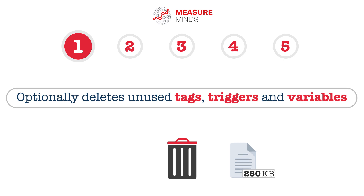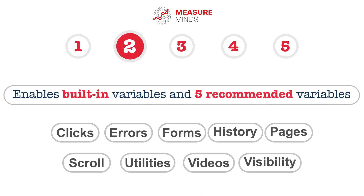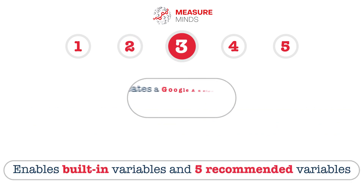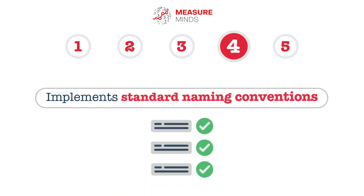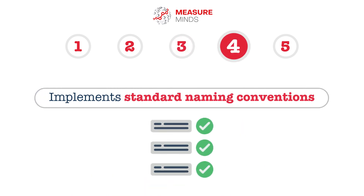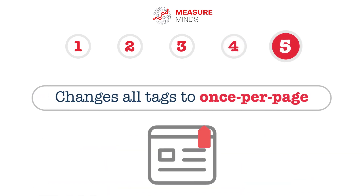It optionally deletes unused tags, triggers, and variables to reduce the size of the container. It enables built-in variables and five recommended variables. It creates a Google Analytics settings variable and references this from all GA tags. It implements standard naming conventions to make it easier to navigate your setup, and changes all tags to once per page to prevent double conversions.